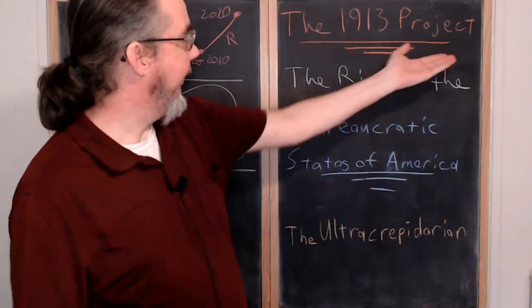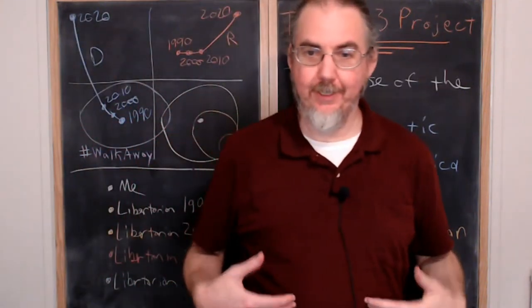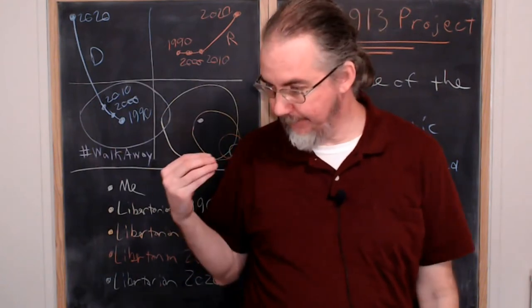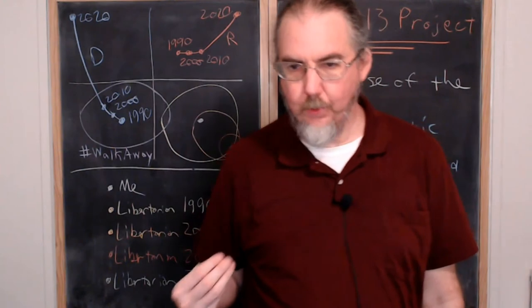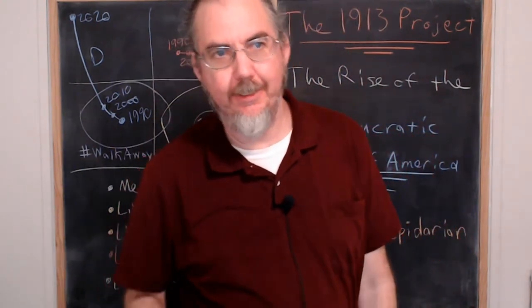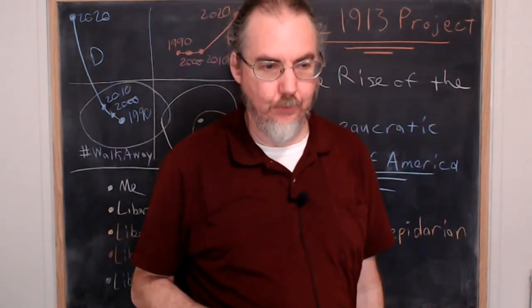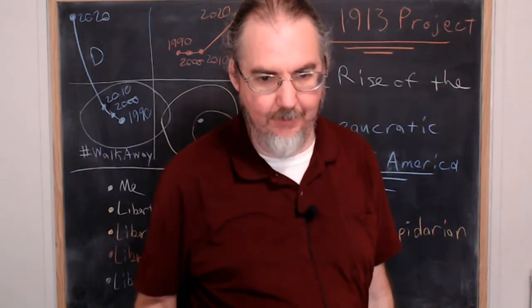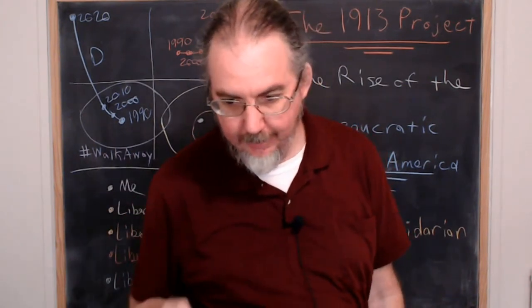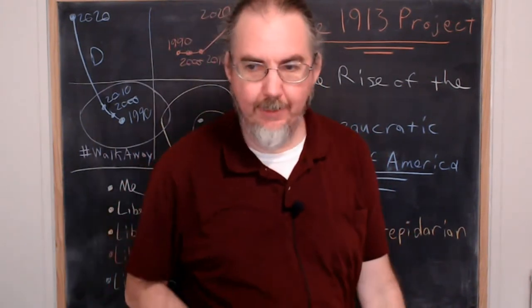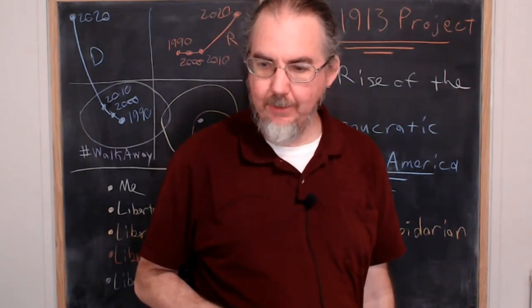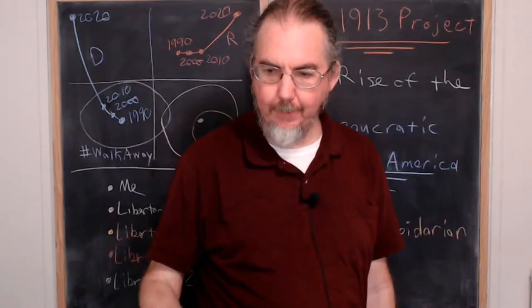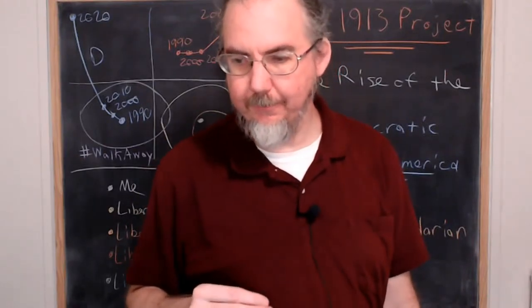Greetings. This is the 1913 Project. My name is Ben Prather, and today for this episode, what we're going to be looking at is what were the motivating factors that led to Woodrow Wilson implementing his policies and the wave of support that he rode, thanks to these policies. I want to look at what the intentions were, what the problems were that were on people's minds that needed fixing.